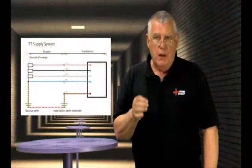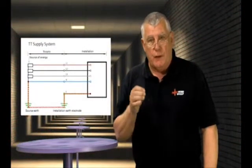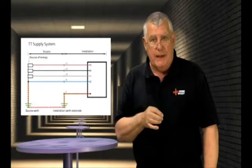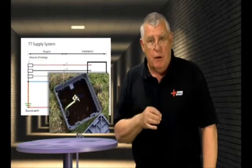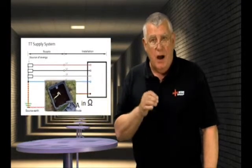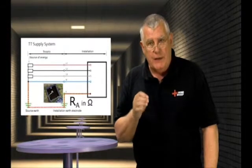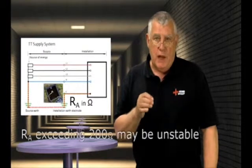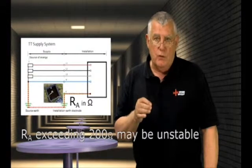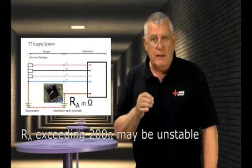With a TT system, part of the Earth return path back to the generator or transformer is not provided by a dedicated conductor but actually through the mass of Earth itself. The resistance of an Earth electrode, RA, is likely to be much higher than the value of ZE for a TN system. In fact, the regulations only recommend that the resistance of an Earth electrode be as low as practical, and that a value exceeding 200 ohms may not be stable. So on a TT system, Earth fault currents aren't always going to be of high magnitude, which may mean that the maximum disconnection times may not be achievable using protective devices such as fuses or circuit breakers.